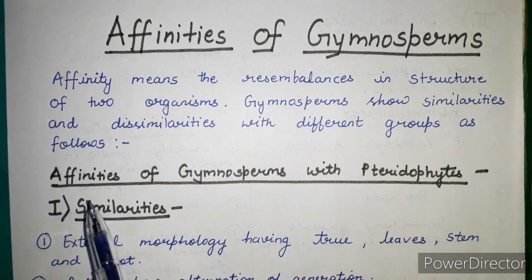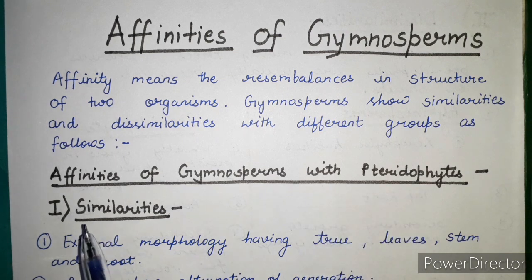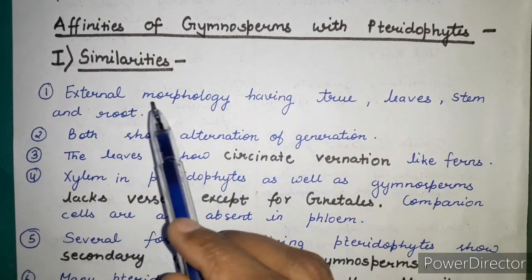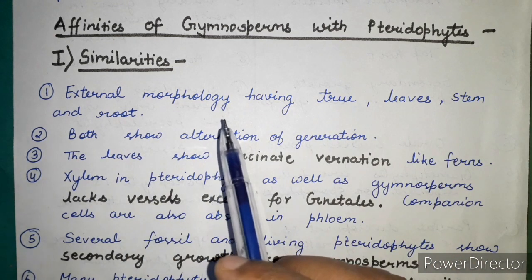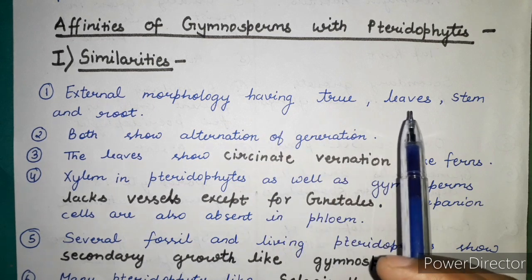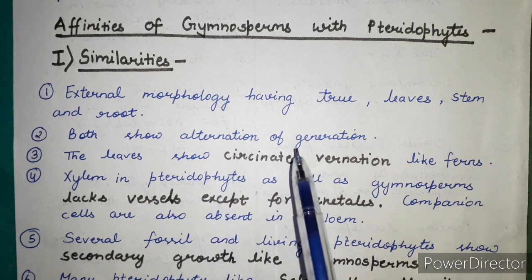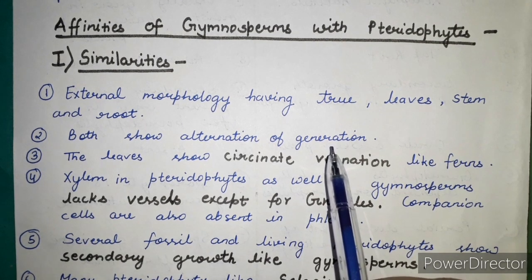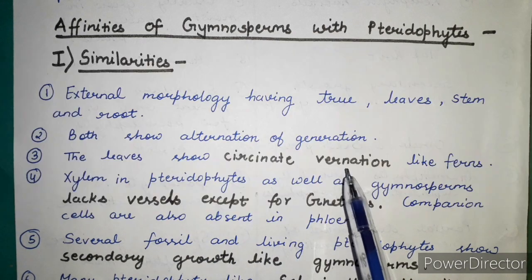Firstly, we will discuss the affinities of gymnosperms with pteridophytes, beginning with similarities. Both gymnosperms and pteridophytes have true stems, leaves, and roots in their external morphology. Both also show alternation of generations — meaning they have a sporophytic and a gametophytic generation, both of which alternate in a cyclic manner.